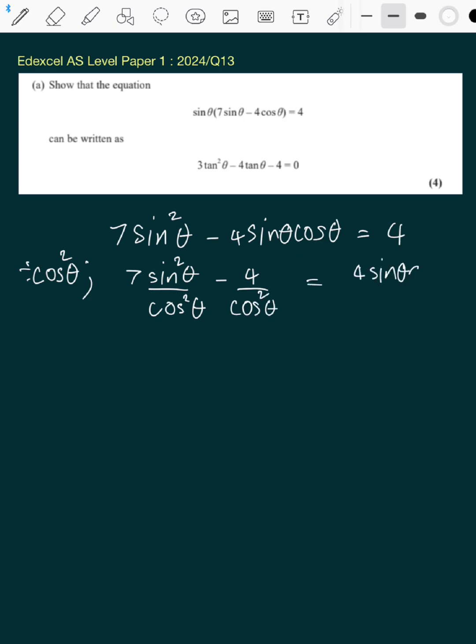So I have 4sinθcosθ divided by cos²θ. Now on the left hand side, if you see, because they have the same denominator, so it's 7sin²θ - 4 divided by the same denominator there. And this will just become 4tanθ on the right side.